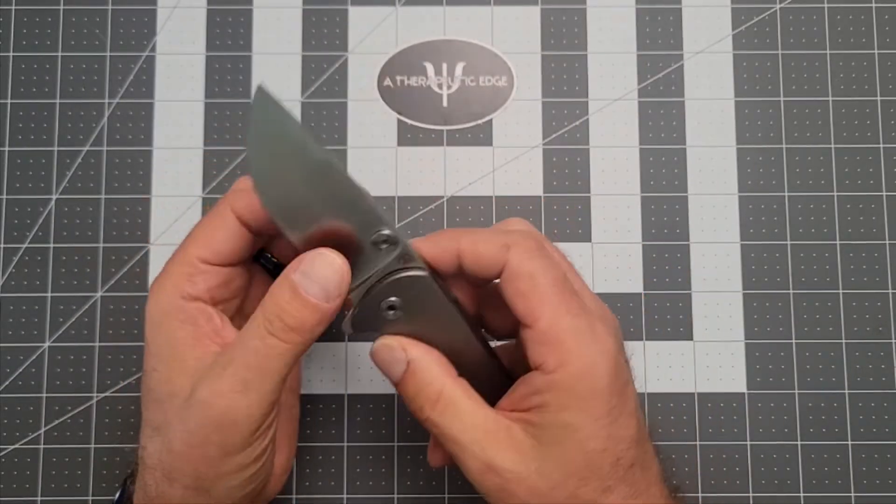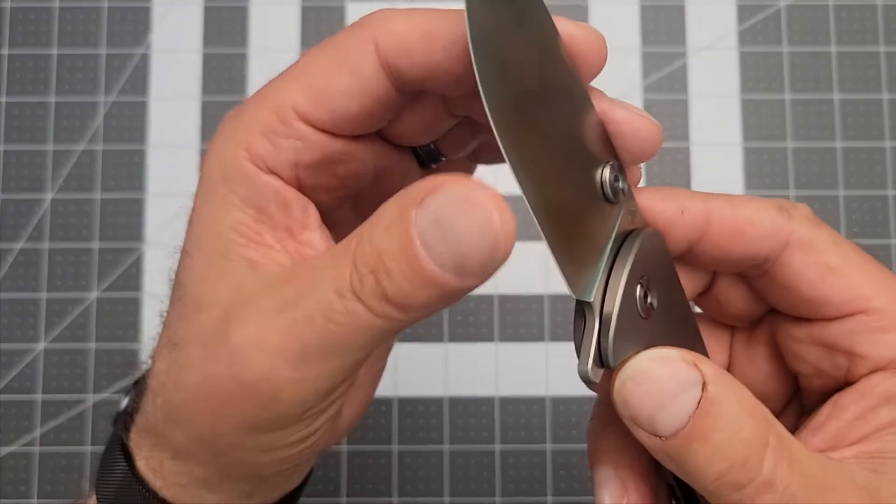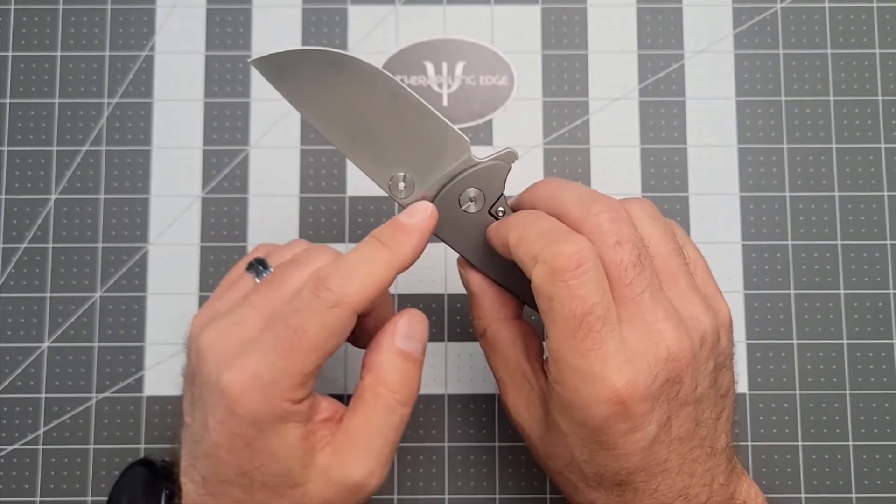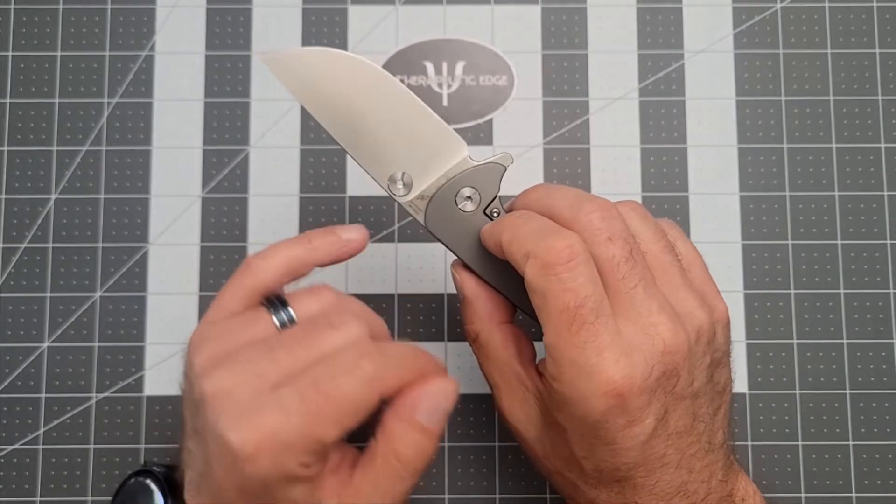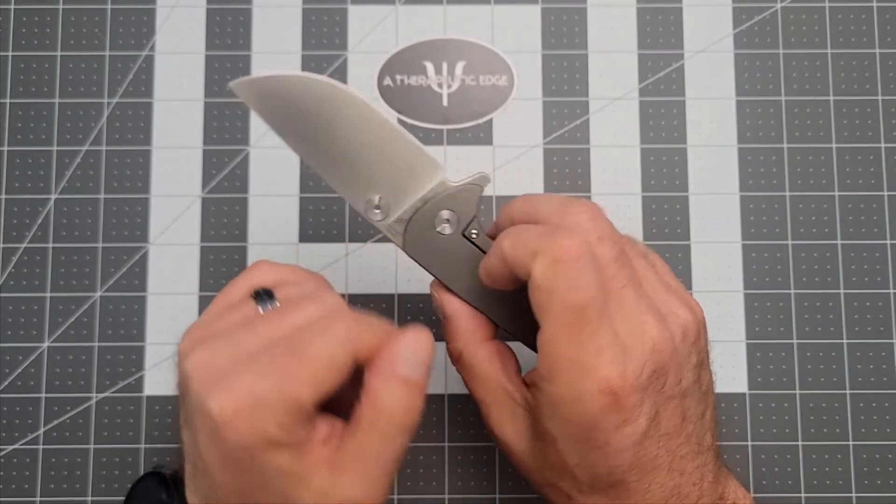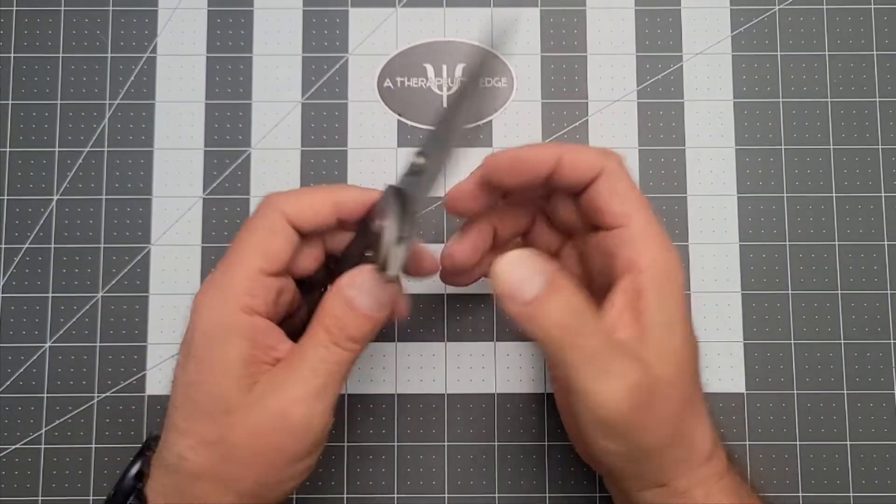Stuff like the grind on this. This super tall flat grind comes down to an absolute razor's edge. There's not a lot of marking on the blade. Just the Dirk Pinkerton design logo, S35VN, serial number, which is useful.